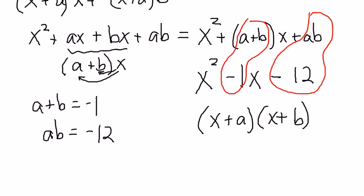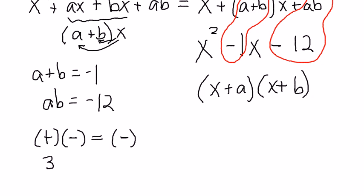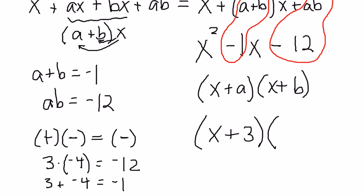Now that we're down to adding to give minus 1 and multiplying to give minus 12, we basically just guess and check. And here, with a little practice, you can kind of do it in your head. Two numbers that give minus 12, well, first of all, one of them has to be positive, and one of them has to be negative. Because a positive times a negative is a negative. And a little bit of thought will convince you that positive 3 times negative 4 will give us negative 12, and 3 plus negative 4 gives us negative 1. So, that means we want x plus 3 and x plus negative 4, which you might write as x plus 3 times x minus 4.